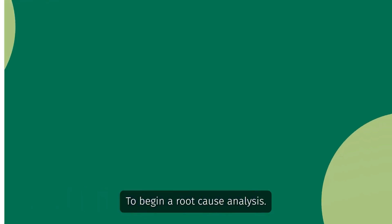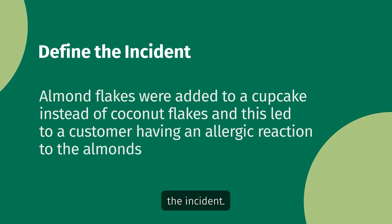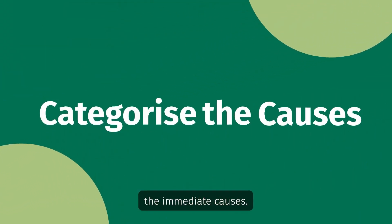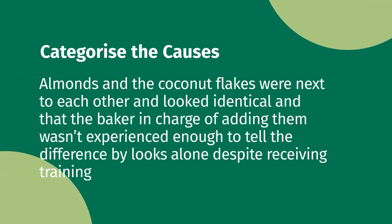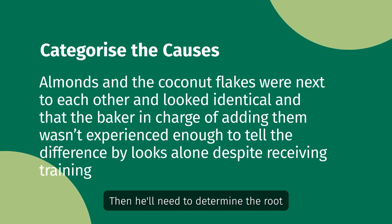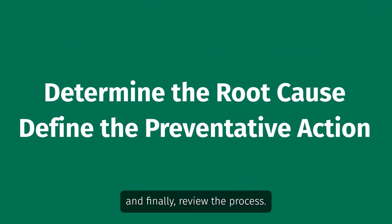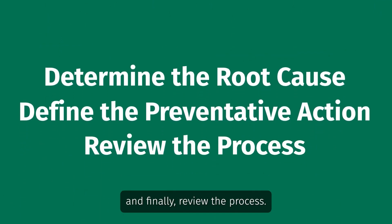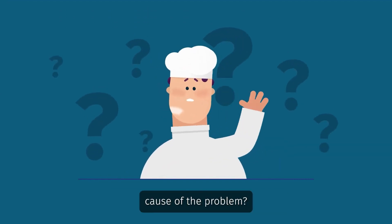To begin a root cause analysis, Joe needs to firstly define the incident. Next, he needs to categorise the immediate causes. Then he'll need to determine the root cause, define the preventative actions needed, and finally review the process. But how does Joe determine the root cause of the problem?